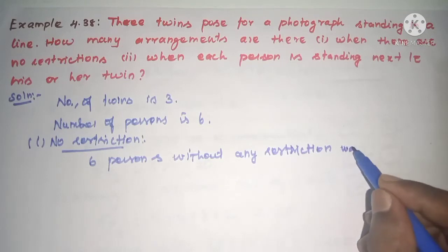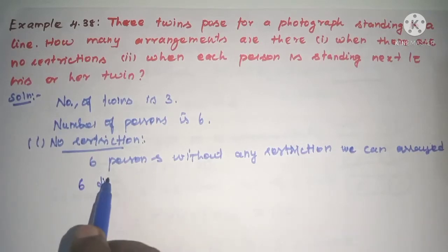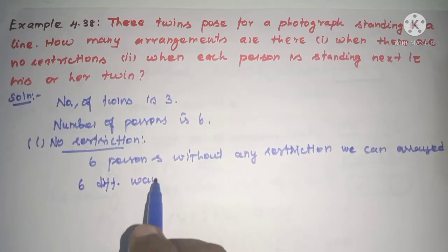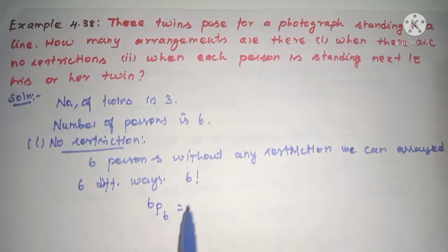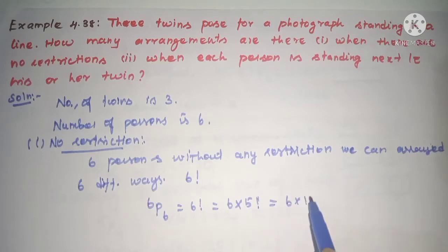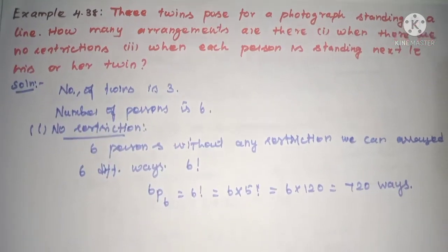We can arrange 6 different ways, so it is 6 factorial. 6! = 6 × 5! = 6 × 120 = 720 ways without restriction. Here in submission 2, when each person is standing next to his or her twin: